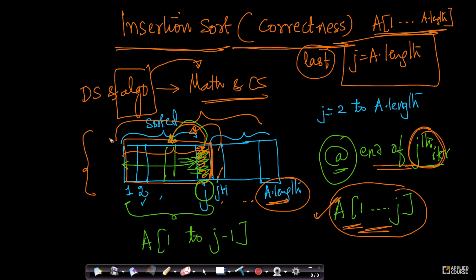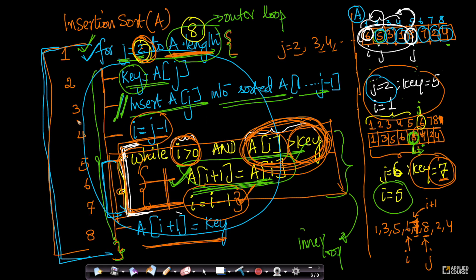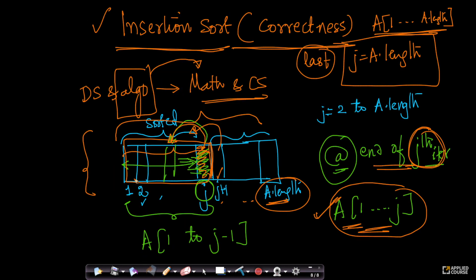This is one way we can convince ourselves and others that at the end of insertion sort — when j equals A.length and we have executed the entire for loop — the whole array A from A[1] to A[A.length] is sorted. This is the simplest form of constructing a mathematically rigorous argument to prove that our algorithm is correct. We will learn many more such arguments as we progress through the course.